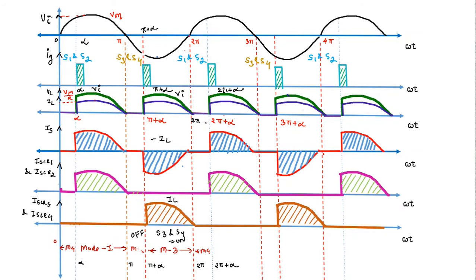In Mode 4 (ωt = 2π to 2π + α), S1 and S2 are forward biased but not yet triggered, so all SCRs act as open circuits. Load current, load voltage, source current, and all SCR currents are zero. After Mode 4, Mode 1 begins again. These are the output waveforms of the full wave bridge converter with resistive load. Thank you for watching — please subscribe to the channel for more updates.